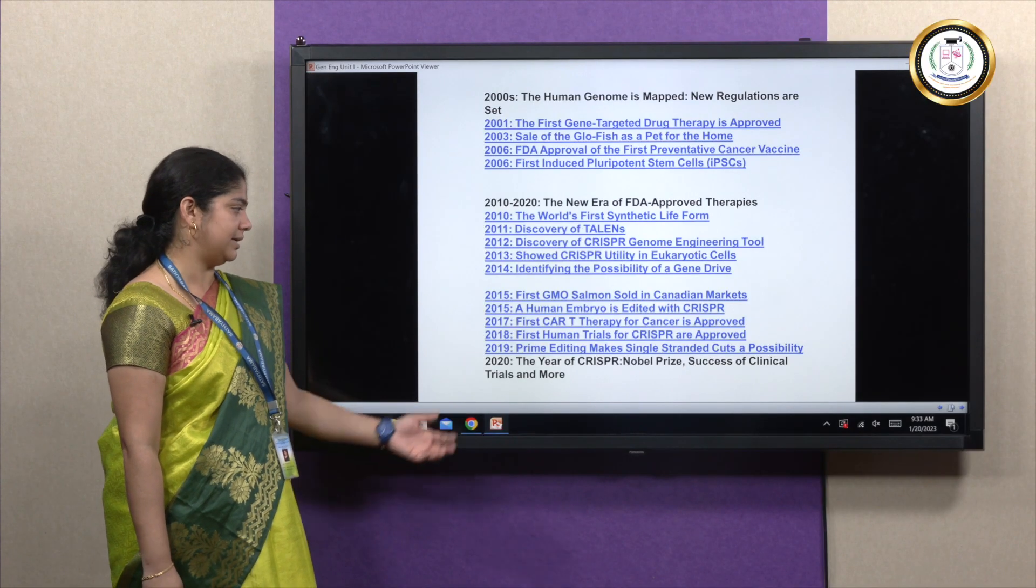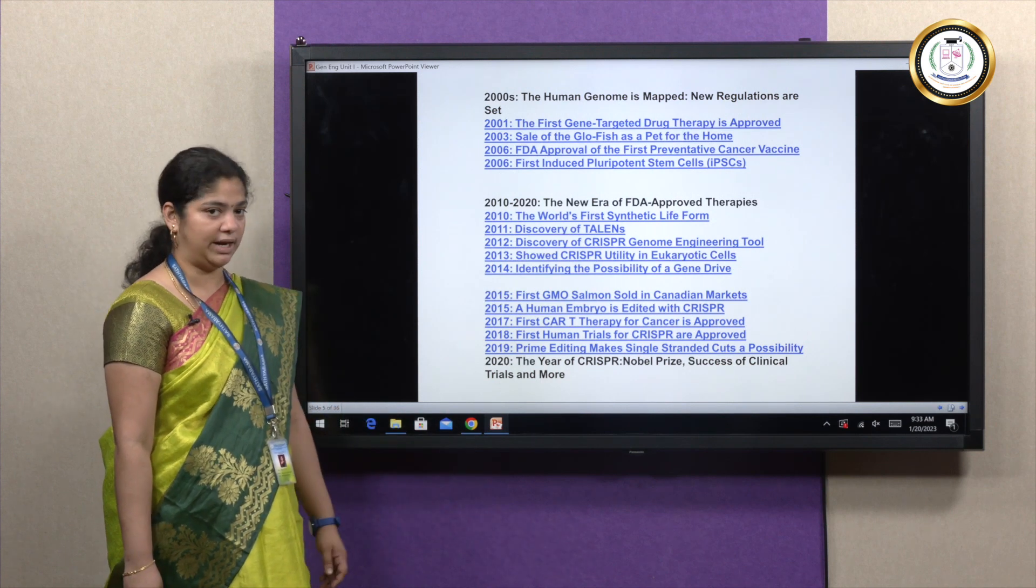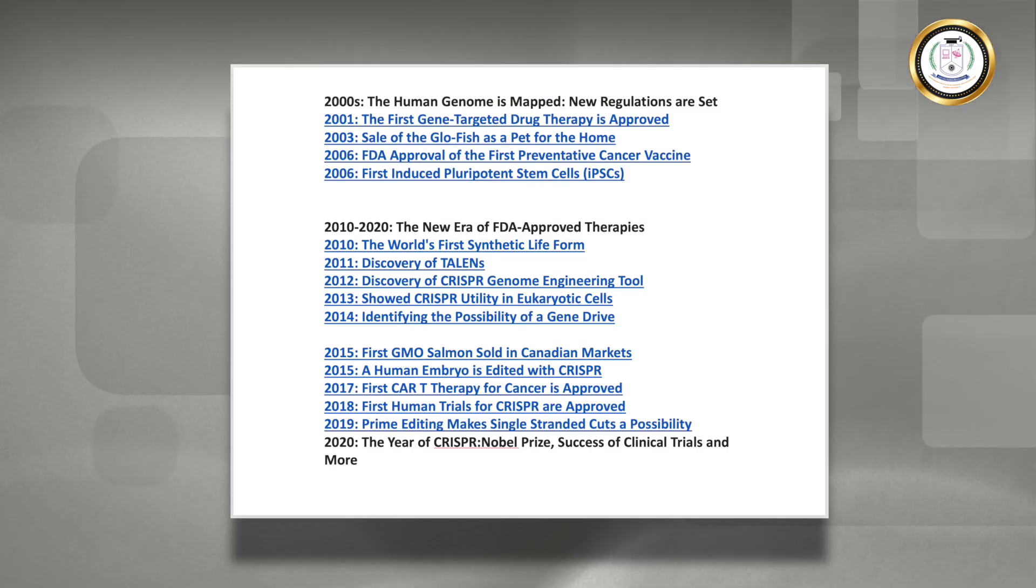By 2015 we can see first GMO salmon or human embryo was edited using CRISPR, and this finally was able to perform a gene therapy using CRISPR-Cas9 system.